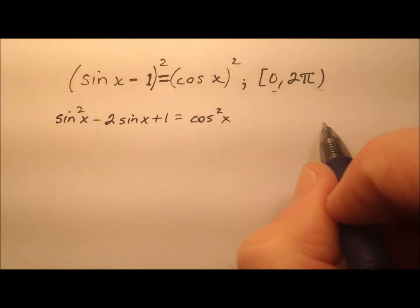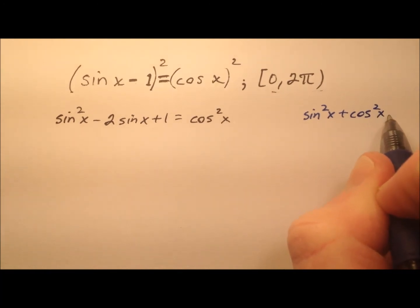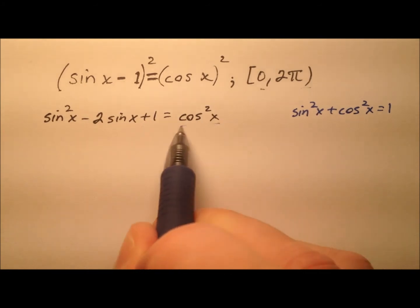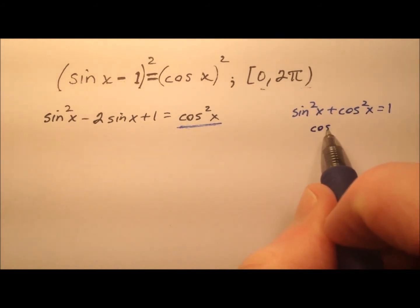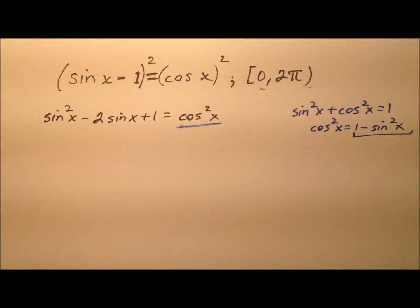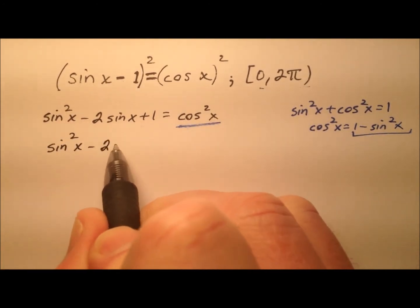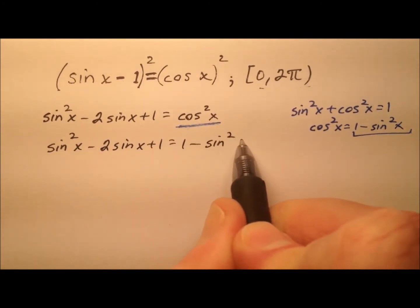We know the Pythagorean identity here: sine squared x plus cosine squared x equals 1, so we can use this to go ahead and solve for cosine squared and do a little substitution here so we can write it in terms of sine. So cosine squared x equals 1 minus sine squared x. So let's go ahead and make that substitution. We're going to have sine squared x minus 2 sine x plus 1 equals 1 minus sine squared x.